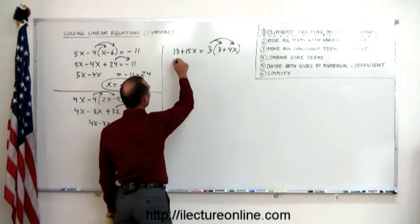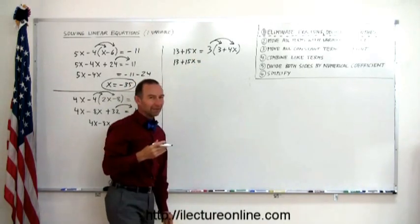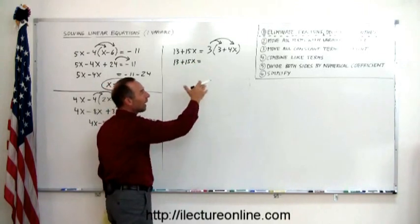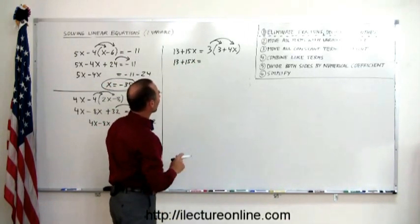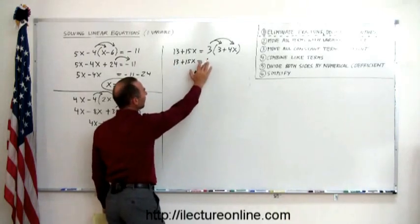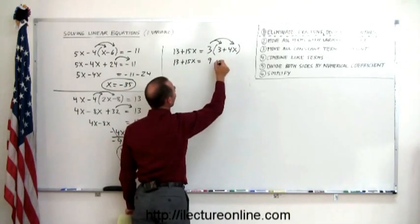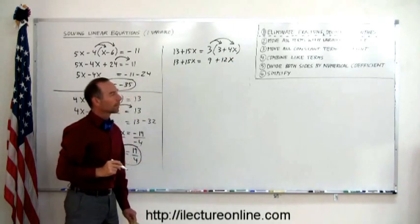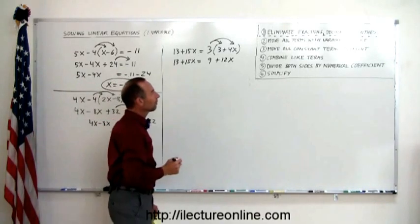The left side doesn't change. 13 plus 15x. And one of the great things about having this systematic approach is that you leave everything else alone as you do one step at a time. It just makes it a lot easier to work with. So we don't do anything on the left side. And here we multiply 3 times 3, which is 9. And 3 times 4x is 12x.